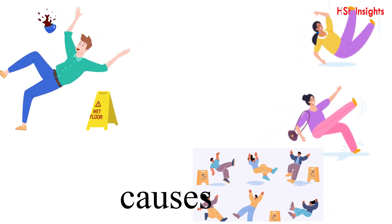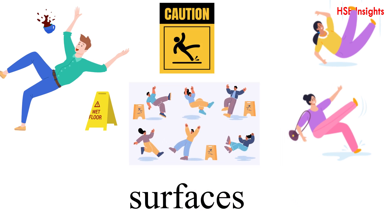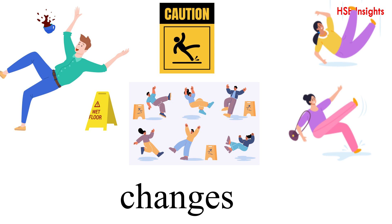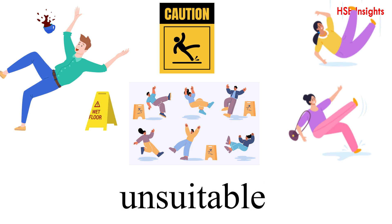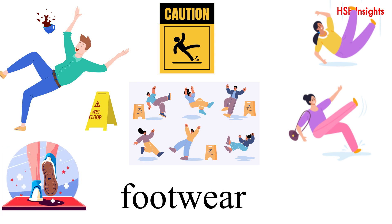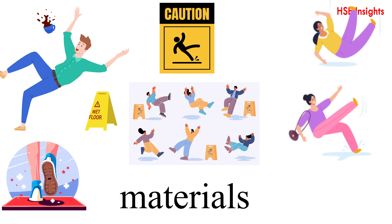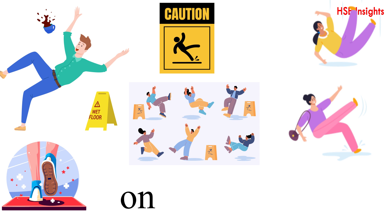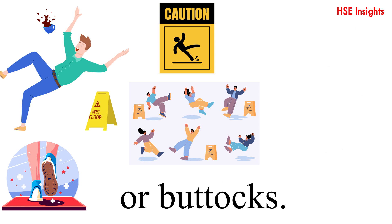Common causes include wet or slippery surfaces, water, ice, spills, uneven surfaces, changes in floor level, loose mats or unsuitable footwear with worn soles, and smooth material. You typically slip backwards, leading to falls on your back, hips, or buttocks.